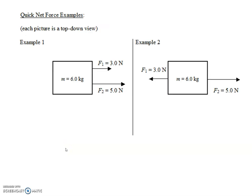On the back side of your notes page are some really quick examples to get the idea of how net force works. In each of these, we're looking at a top-down view of a 6-kilogram object. Here in example 1, there are two forces, F1 and F2, pulling both to the right. Maybe these are two different people pulling with two different ropes. I bet your gut is going to tell you what the net force would be.